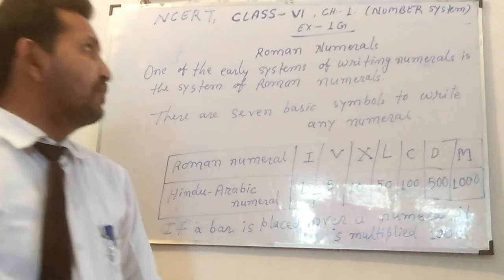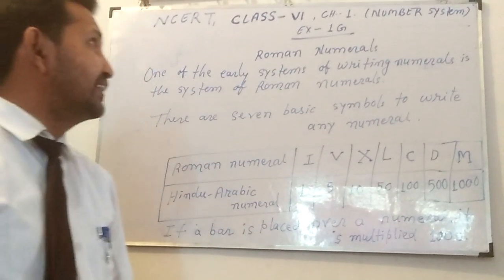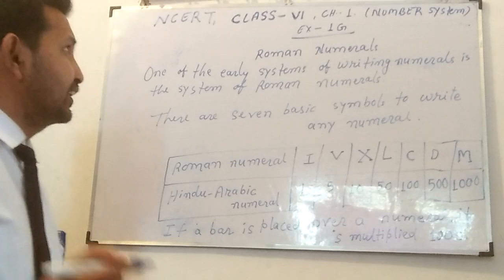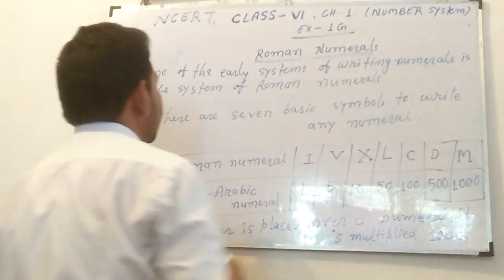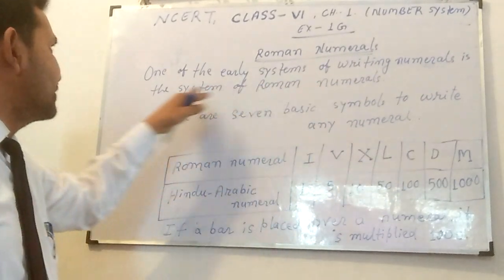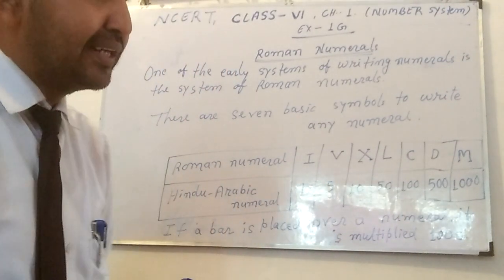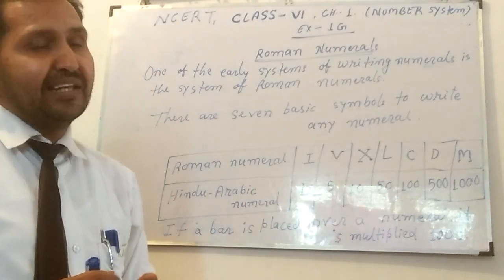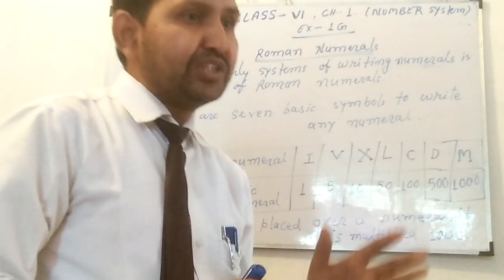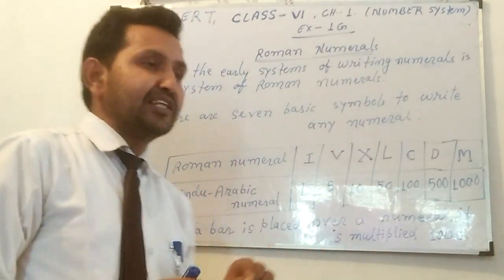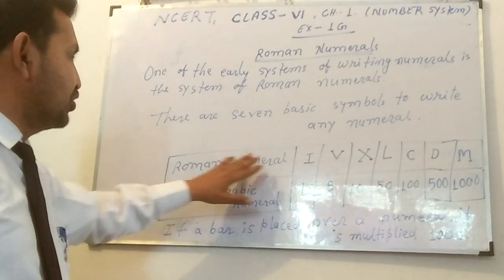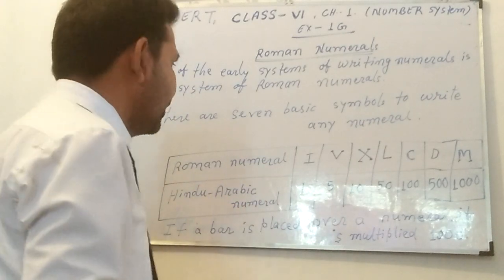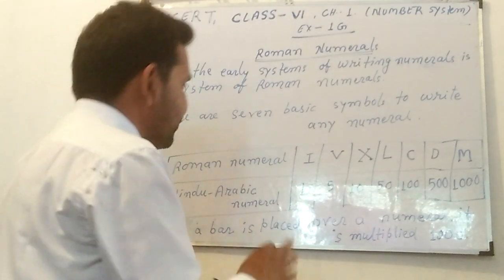Now we begin Chapter 1. We have studied Chapter 1, Exercise 1G. Here, in the numbers, it is only the special configuration — what's the numeral number? This is one of the yearly systems of writing numbers. The system of numbers — in the starting time we used a type of number called the Roman numeral. There are seven basic numeral symbols used to write any type of number. We use only these seven basic symbols to complete any greater real numbers.